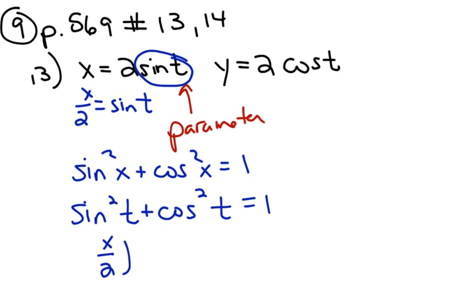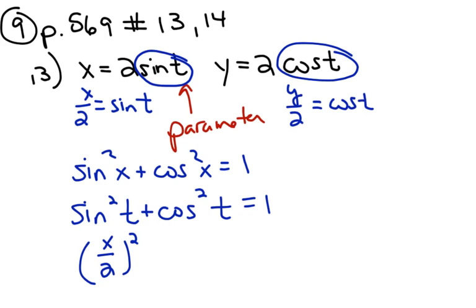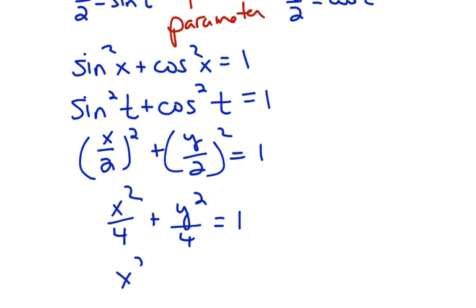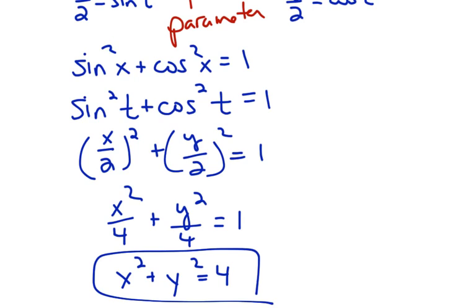So I get (x/2)² plus (y/2)² equals 1, which is x² over 4 plus y² over 4 equals 1. It turns out that's just the circle x² plus y² equals 4. If you had graphed this in parametric mode, you would have gotten a circle of radius 2. But not all of these come out to be a circle.